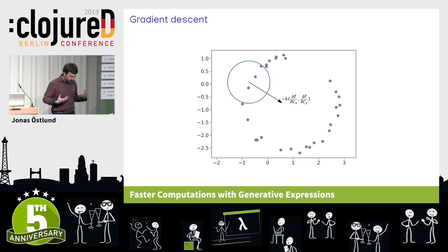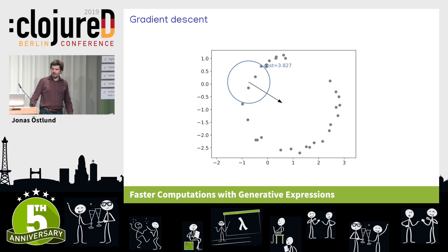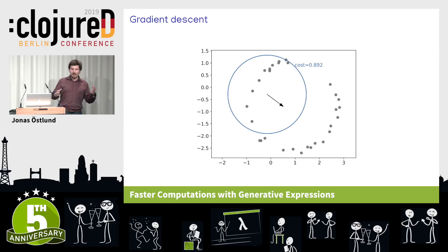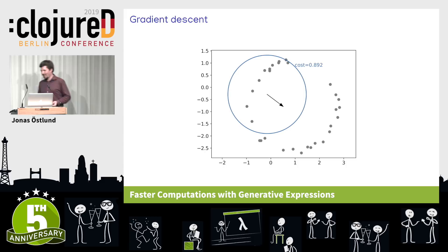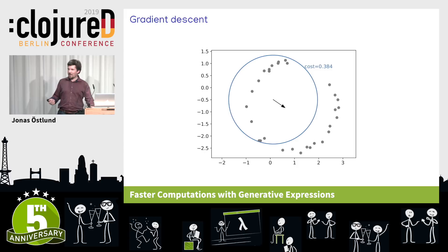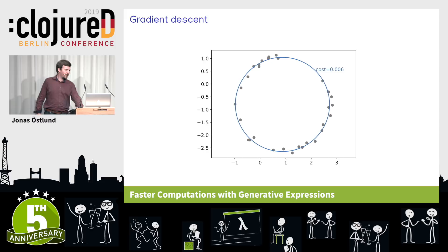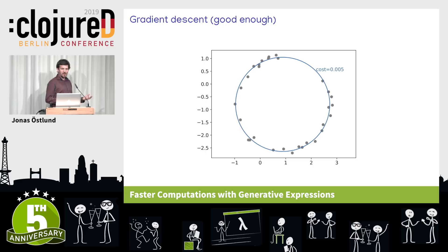We can construct a small algorithm: start with a guess of the circle parameters, then update this guess by taking a small step in the opposite direction of the gradient. After each step, the cost decreases and the circle fits better to the points. We repeat this process until we have something that is good enough.